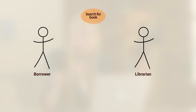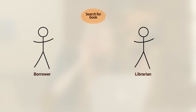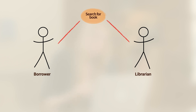If we look back at our textual use case, we can see that both the librarian and the borrower can search for a book. The borrower might show up at the library saying they would love to read Moby Dick, and the librarian will help them find that book. We can therefore connect a line from 'search book' to the librarian and to the borrower, so actually on both sides of our system.